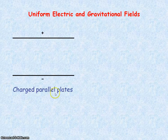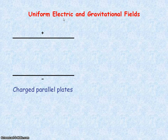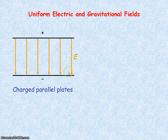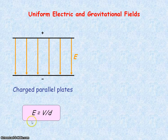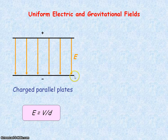Charged parallel plates produce a uniform electric field directed from the positive plate to the negative plate. You can see it is a uniform field by the equal spacing between the field lines. The equation for electric field strength in a uniform field is the potential difference between the plates divided by the distance separating the plates.